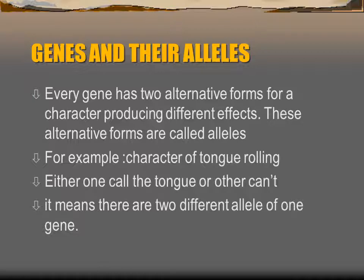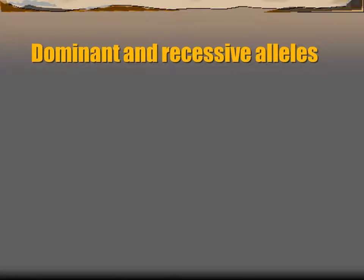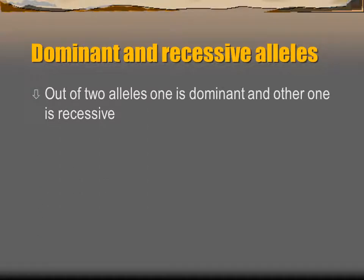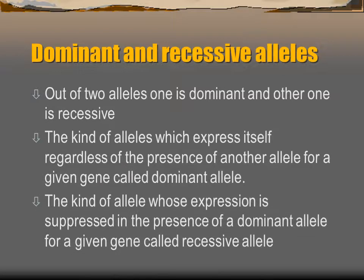If both alleles of a gene are the same, we call it homozygous. If they are different, we call it heterozygous. The two kinds of alleles are dominant and recessive. The dominant allele can express itself regardless of the presence of another allele. The recessive allele cannot express itself in the presence of a dominant allele.